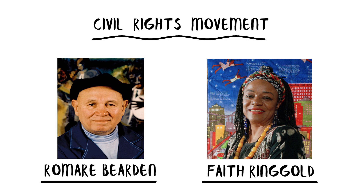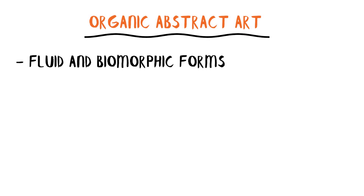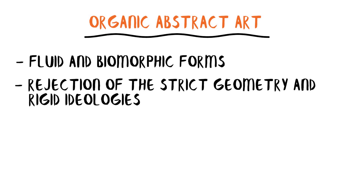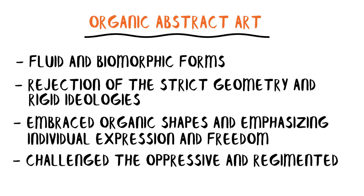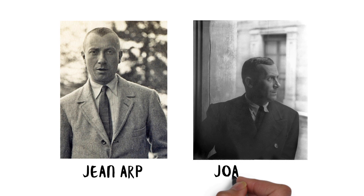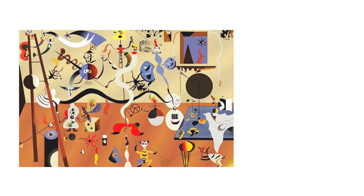Organic abstract art, characterized by fluid and biomorphic forms, can be seen as an anti-fascist statement due to its rejection of the strict geometry and rigid ideologies associated with fascist aesthetics. By embracing organic shapes and emphasizing individual expression and freedom, organic abstract artists challenged the oppressive and regimented ideals of fascist regimes. Artists like Jean Arp and Joan Miró explored organic abstraction to celebrate the spontaneity and vitality of life, contrasting the authoritarianism and conformity of fascist ideologies.